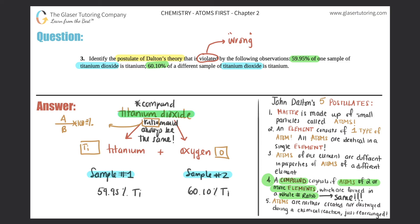So look at these percents. Are they the same or are they different? 59.95 versus 60.1. They're different, which means that the ratio is different. So that's why postulate number four is violated, because postulate number four says that a compound, any certain compound, will always have the same ratio, which means that the percentages should stay exactly the same for that compound.